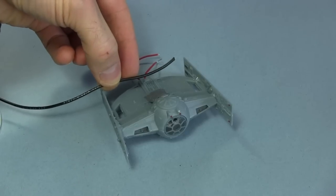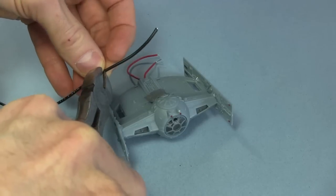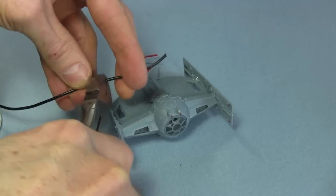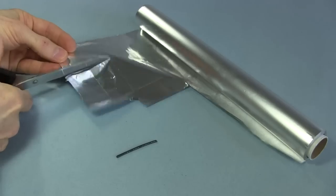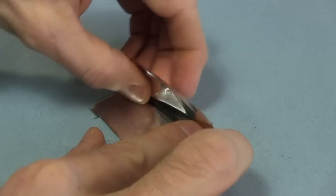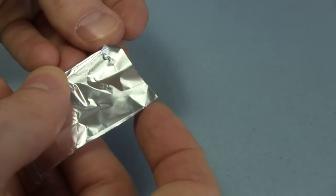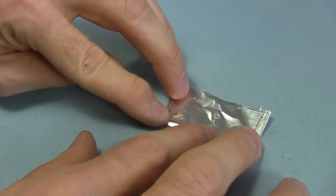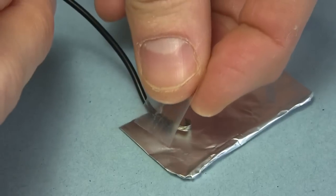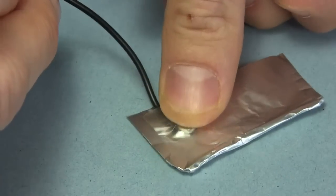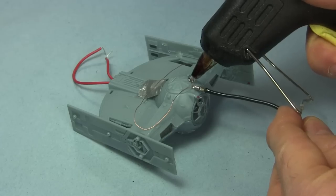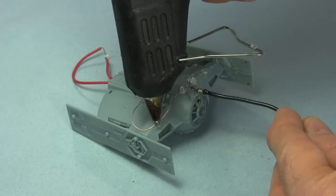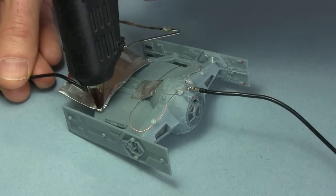I next measure a length of insulated wire that fits across the back of the TIE Fighter. Really anything long enough with some thickness will do. I use it to measure out a piece of kitchen aluminum foil. I wrap the foil around the wire and fold over the ends. That gives me the smooth edge. I attach an insulated wire to that too. That will also go to my high voltage power supply. I hot glue the loop of thin wire to the front and then the smooth aluminum foil to the back.